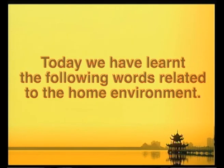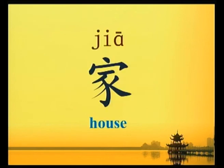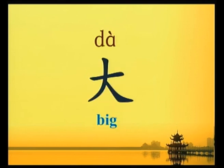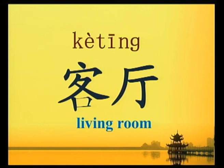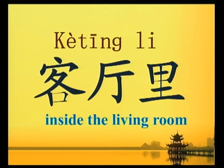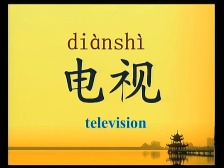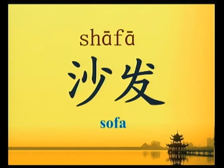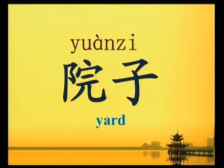今天我們學了一些有關家庭環境的詞語。家 (house). 大 (big). 客廳 (living room). 裡 (in/inside). 客廳裡 (inside the living room). 電視 (television). 沙發 (sofa). 院子 (yard). Hope you have enjoyed this lesson.